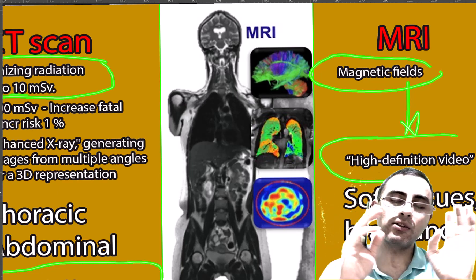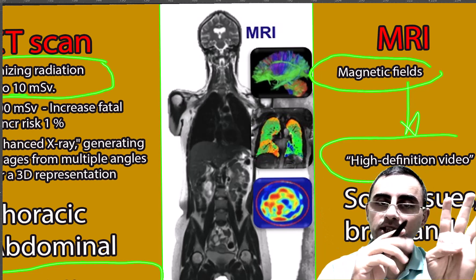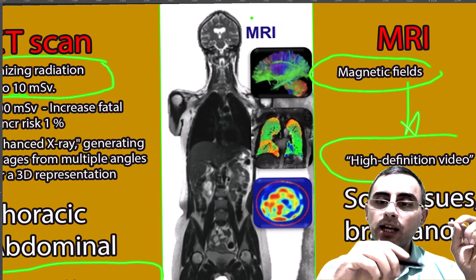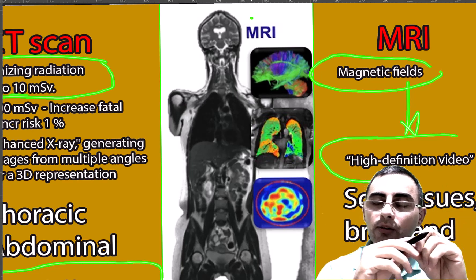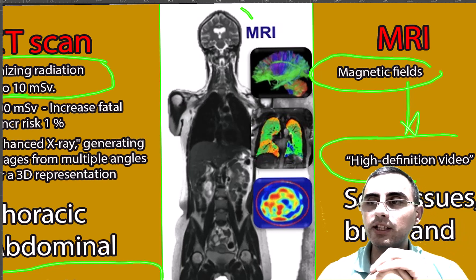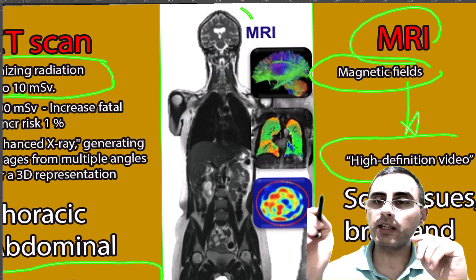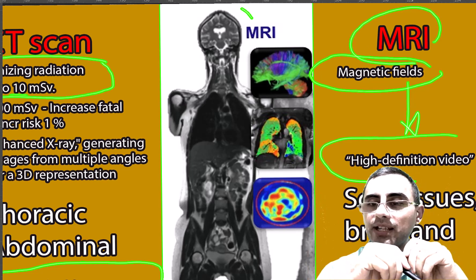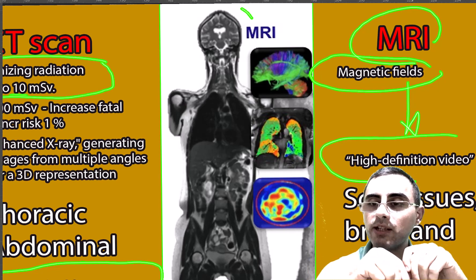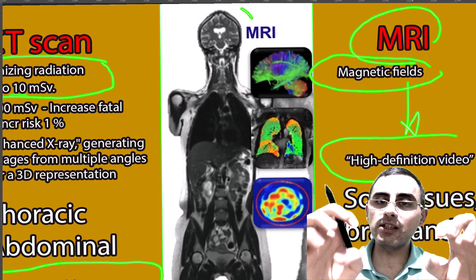While CT scan sees almost everything, if we want a detailed picture of soft tissues like the brain, it's MRI. For fine, high-definition images of internal organs — especially for cancer monitoring and cancer staging — it's MRI in many cases. For muscles and uterine myomas, it's also MRI.